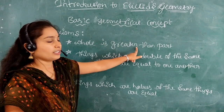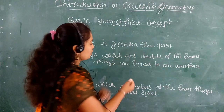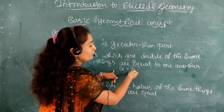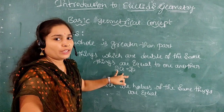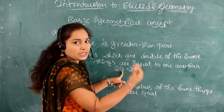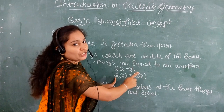The next axiom: things which are double of the same things are equal. If A equals B, then 2A equals 2B. For example, if A equals 2, then B is also 2, so 2 times 2 equals 2 times 2, giving 4 equals 4. You will get a result that is also equal.